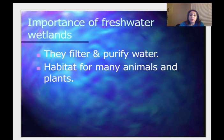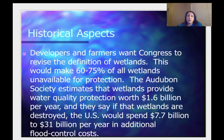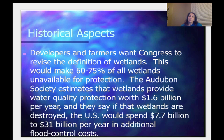The importance of freshwater wetlands: the biggest thing is they filter and purify water and provide habitat for many animals. Developers and farmers want Congress to revise the definition of a wetland, which would make 60 to 75% of all wetlands unavailable for protection. The Audubon Society estimates these wetlands provide protection worth $1.6 billion per year. If wetlands are destroyed, we would spend $7.7 billion to $31 billion per year in additional flood control costs. It's cheaper to protect wetlands than to take them away and then fix everything from the floods.